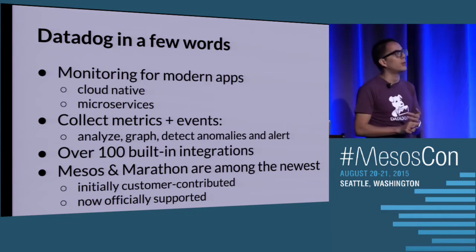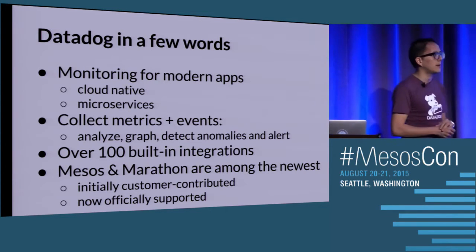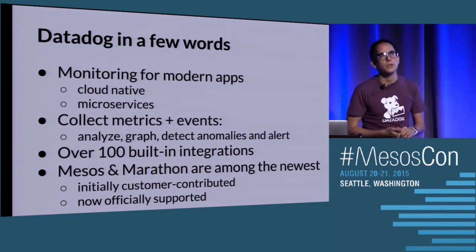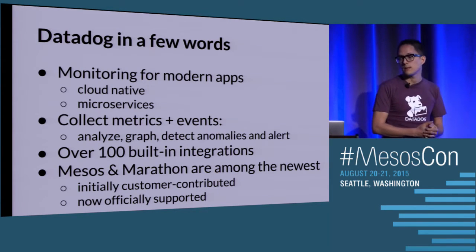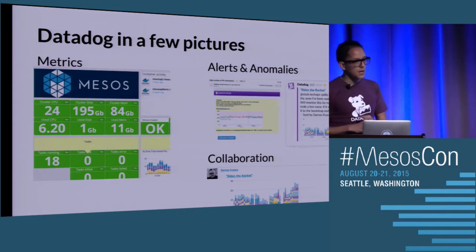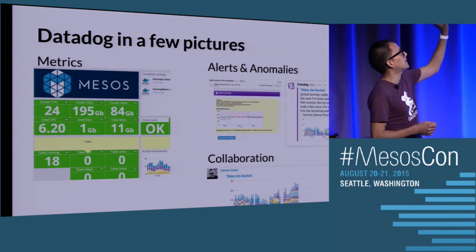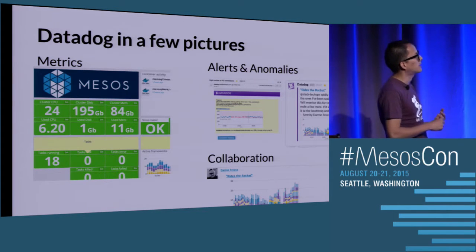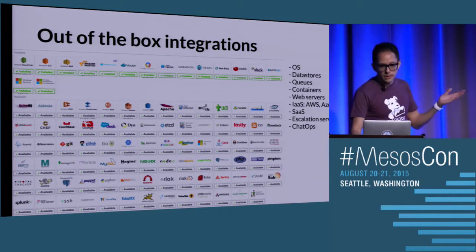We have over a hundred built-in integrations, and Mesos and Marathon are two of the newest ones. Interestingly, they were initially customer-contributed, which means we didn't build them, but now we officially support them. I think this is in recognition of the growing community of Mesos users, and you guys are today a testament to it. I wanted to show you what it looks like — we collect metrics, create alerts, detect anomalies, and collaborate around the data.